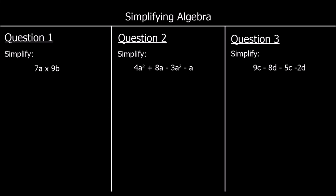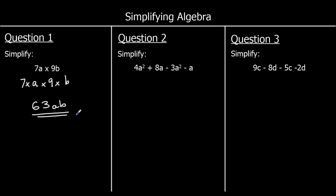Let's finish up with 3 questions. Question 1: 7a times 9b — that's the same as 7 times a times 9 times b. We can multiply the numbers together in any order: 7 nines are 63, and we've got 63 times a times b. We don't write times signs in algebra, so the answer is 63ab.